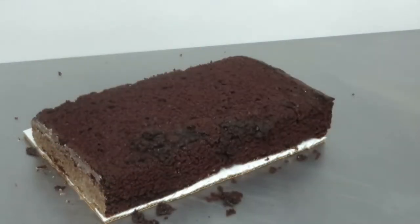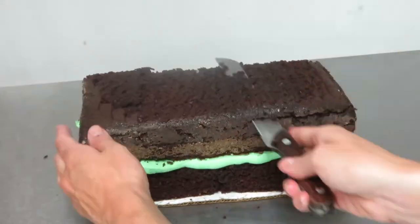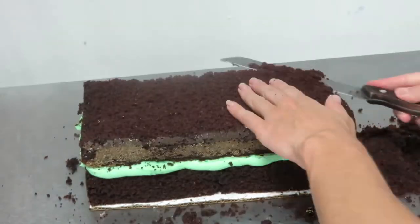I'm trimming it to make it completely flat and piping mint buttercream onto it as a filling. Now I'm placing another third of the cake on top and leveling that too.